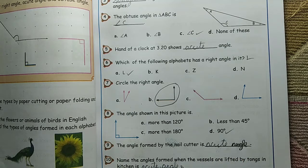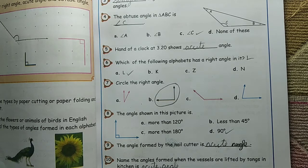Name the angle formed when vessels are lifted by tongs in kitchen is acute angle.